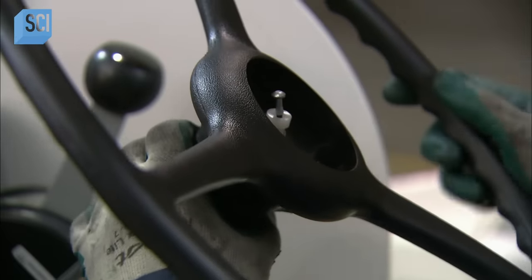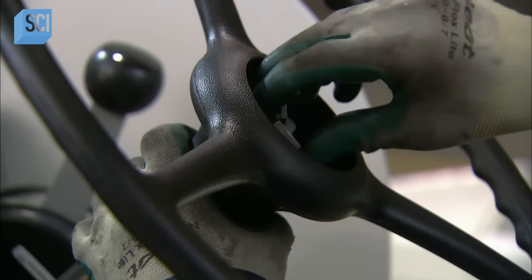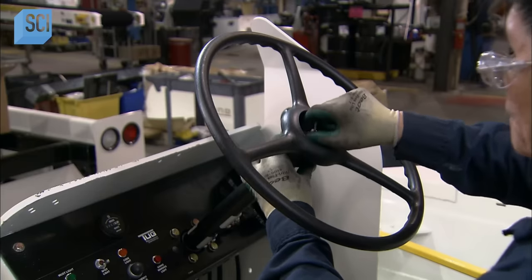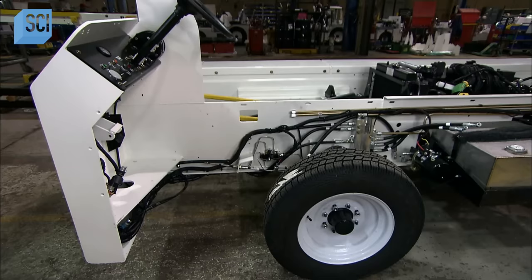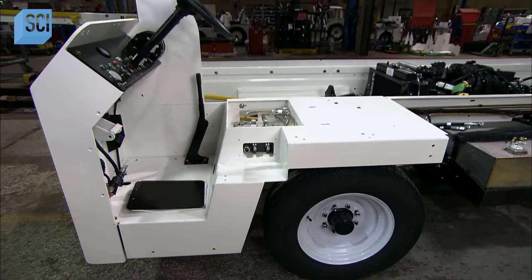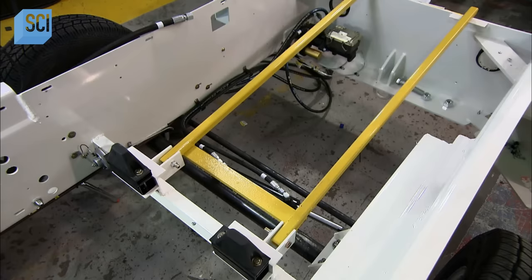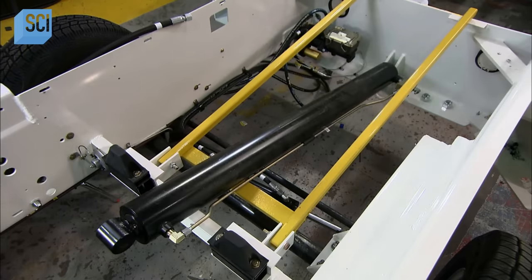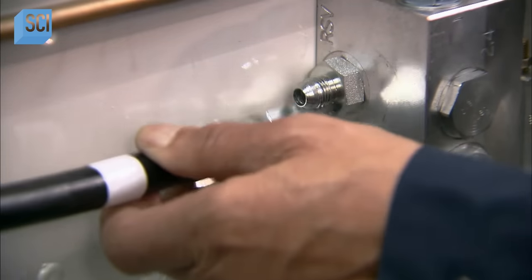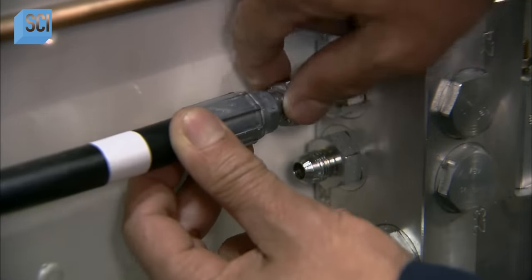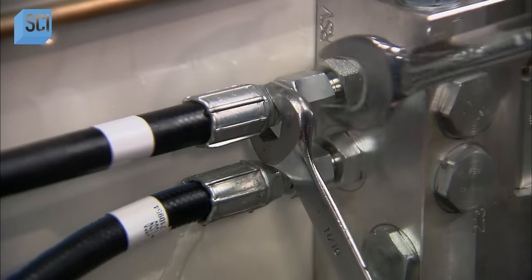After installing the power steering system, technicians run wiring for the lights and other electrical components, run hydraulic hoses for the brakes and lift cylinders, and install the controls for the conveyor. They install the hydraulic cylinder which raises the front lift arms, then connect the fluid hoses to the hydraulic pump.